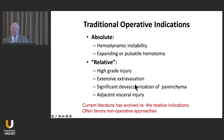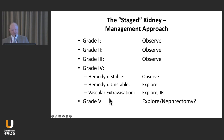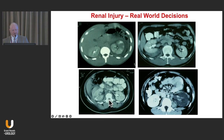Significant devascularization of parenchyma or adjacent visceral injuries weigh into the decision about exploring the kidney, and there's a pretty good evidence basis for the importance of these findings. If you have had the opportunity — the luxury — of getting a CT scan before the surgeons take the patient to the OR, this obviously gives you very important information. It's the grade 4 and grade 5 injuries for which these complex decisions need to be made.